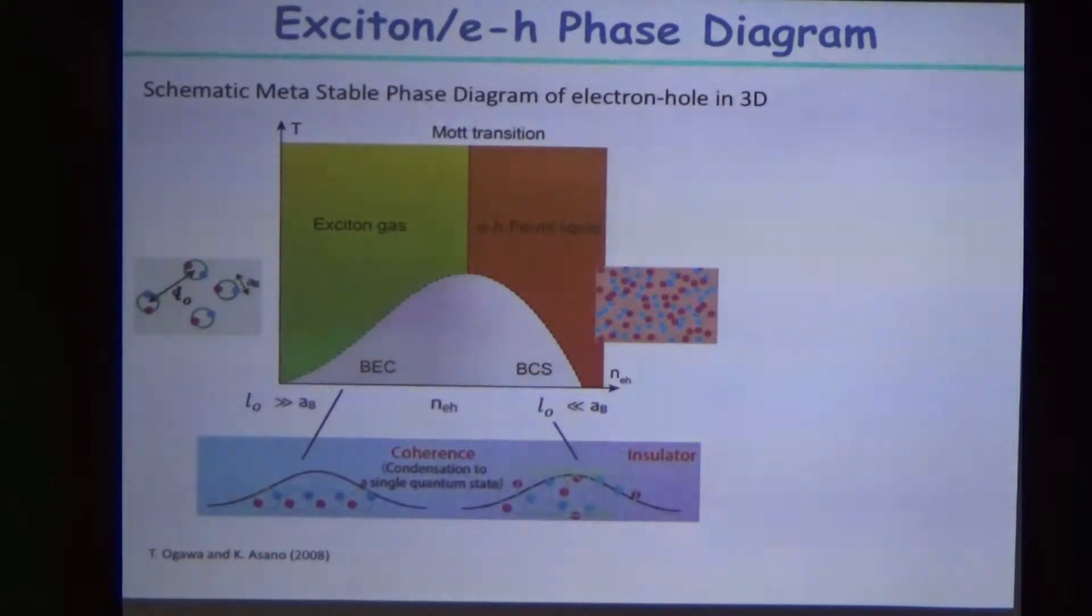That is what you call the Mott transition to the semi-classical limit. Very similarly, even for Bose-Einstein condensation, as you increase exciton density, you expect this BEC to turn into more separate condensation of electron-hole, the BCS limit. This type of language has been discussed in cold atom communities, and you can naturally see a nice crossover between BEC and BCS.